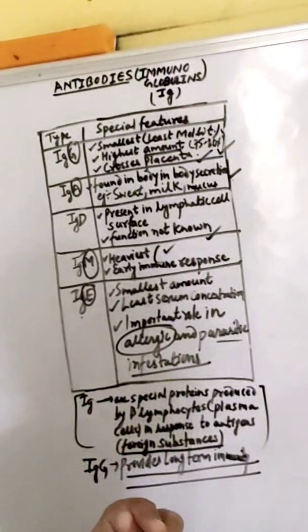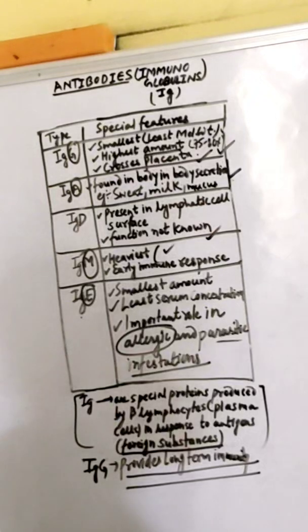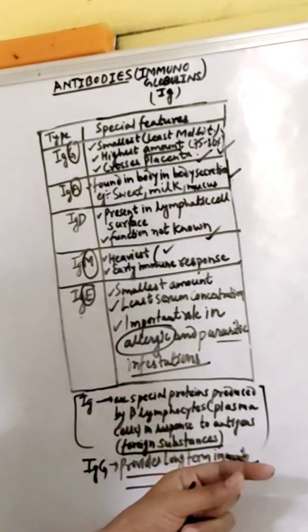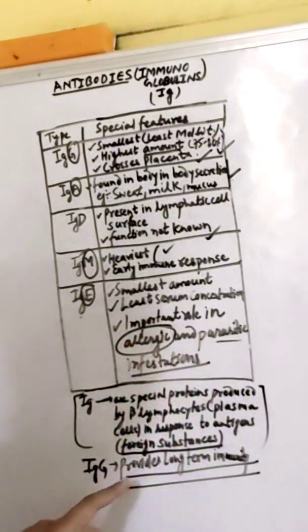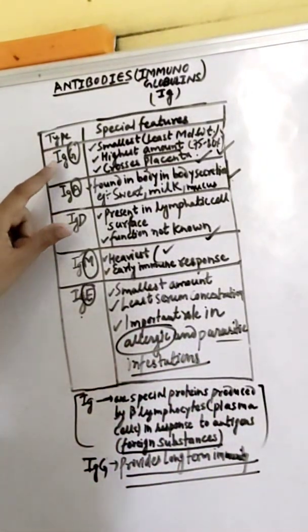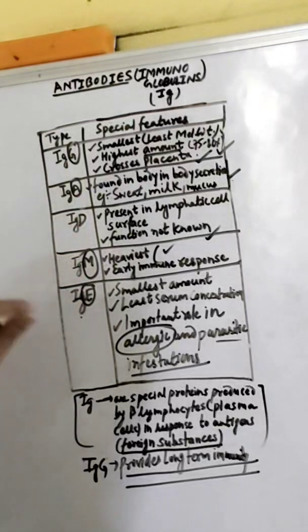For protection from these foreign substances, the body produces immune responses against them. So the types are IgG, IgA, IgD, IgM, and IgE.